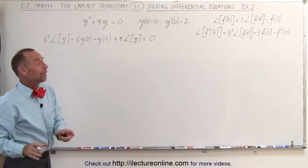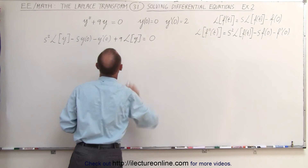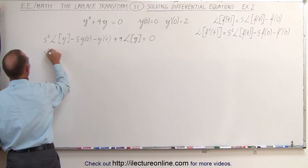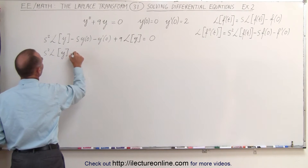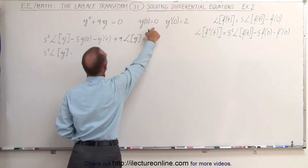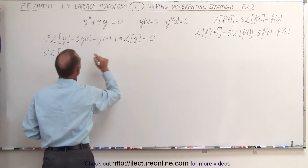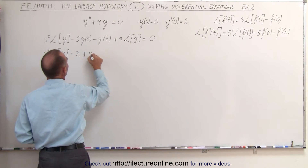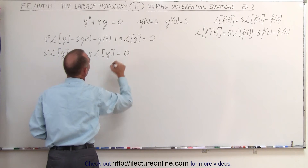Of course, before we do that, we need to evaluate what y at 0 is and what y prime at 0 is. So we have s squared times the Laplace transform of y, minus y at 0 — that's equal to 0, so this term disappears. y prime at 0 is equal to 2, so we get minus 2 plus 9 times the Laplace transform of y equals 0.